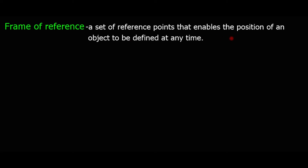So overall, the formal definition of a frame of reference is: a set of reference points that enables the position of an object to be defined at any time. Because the moment you have a reference point, you can define any position — for example from Polokwani to a destination, or from Cape Town to another place.